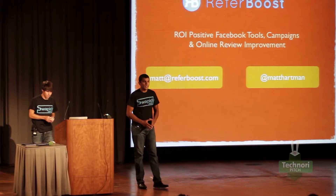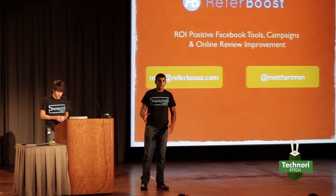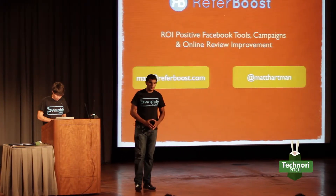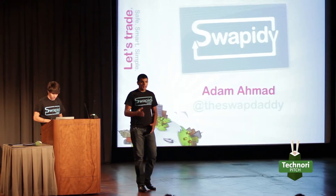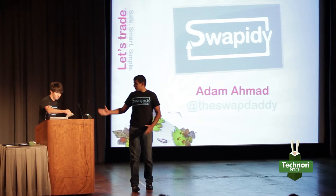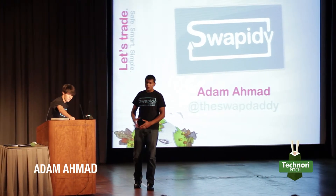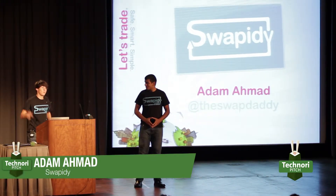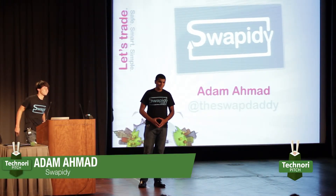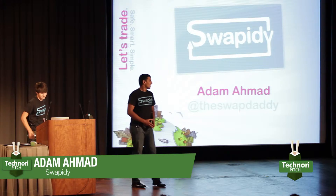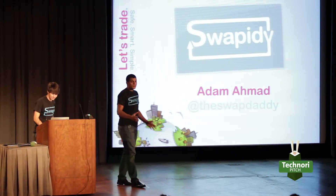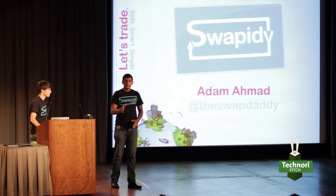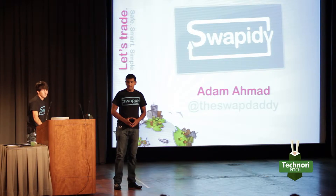Good evening folks. My name is Adam Ahmaud and I'm an 18-year-old serial entrepreneur. This is Nick Korhumel, my operations manager. I'm 12. Today I'm going to be presenting an online revolutionary trading marketplace.